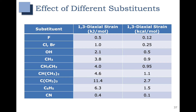Notably, the cyano group, CN, is even less strained than fluorine, and that's because it takes on a linear geometry. So there's really very little interaction with the 1,3-diaxial hydrogens.